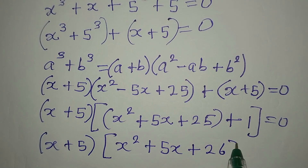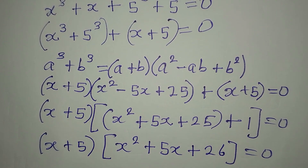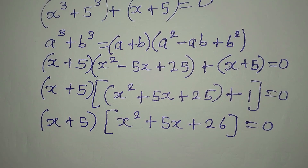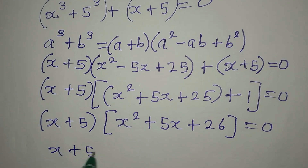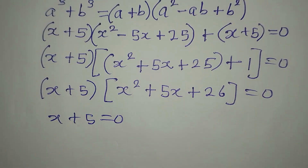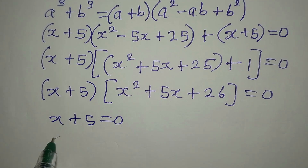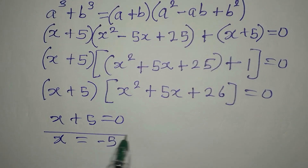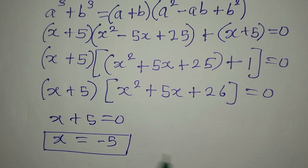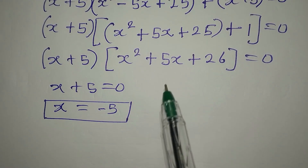Now we are going to equate either of these factors to zero. So x plus 5 equals zero, because we are multiplying both of them to get zero. Then x is equal to minus 5. This is one of the solutions. Now let's go to the other factor.